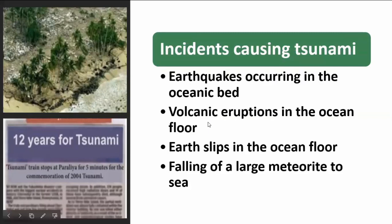Incidents causing tsunami include: earthquakes occurring in the oceanic bed, volcanic eruptions in the ocean floor, earth slips in the ocean floor, and the falling of a large meteorite to sea. Of the above, the greatest ruin would be caused by the fall of a gigantic meteorite to the sea. Such devastation may also be caused by the collision of an asteroid with the earth.